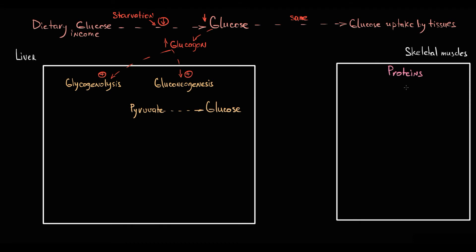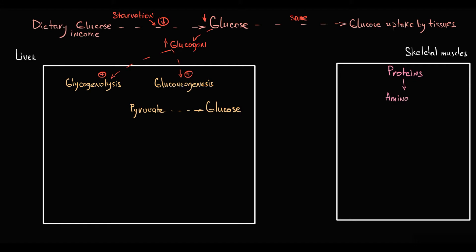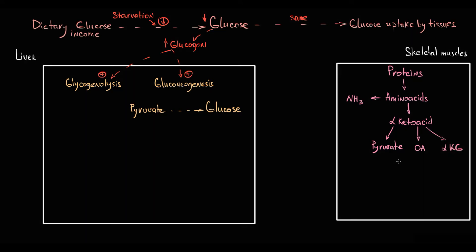Muscle tissue is essentially an assembly of proteins, and proteins consist of amino acids. Amino acids consist of an alpha-keto acid, which is the carbon skeleton, and an amino group. The alpha-keto acids are pyruvate, oxaloacetate, and alpha-ketoglutarate — they are very useful molecules. In muscle tissue, we have these three alpha-keto acids: pyruvate, oxaloacetate, and alpha-ketoglutarate.